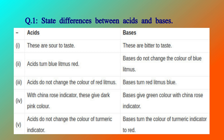3. Acids do not change the color of red litmus. Bases turn red litmus blue. 4. With china rose indicator, acids give dark pink color. Bases give green color with china rose indicator.